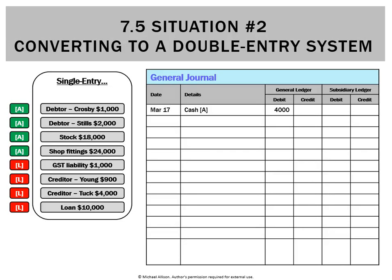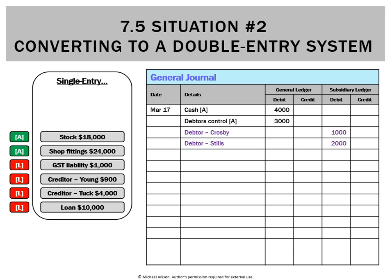For the two debtors — Crosby of a thousand and Stills of two thousand — in the general ledger we'll create a debtors control account of three grand. We'd better also create subsidiary accounts in the subsidiary ledger for both of those debtors, so we can see the two debtors of a thousand and two thousand equal the control account total of three thousand.